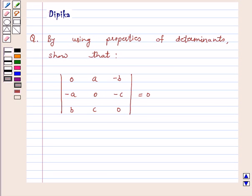Hi and welcome to the session. I am Deepika here. Let's discuss a question. The question says, by using properties of determinants, show that determinant 0, A, minus B, minus A, 0, minus C, B, C, 0 is equal to 0.